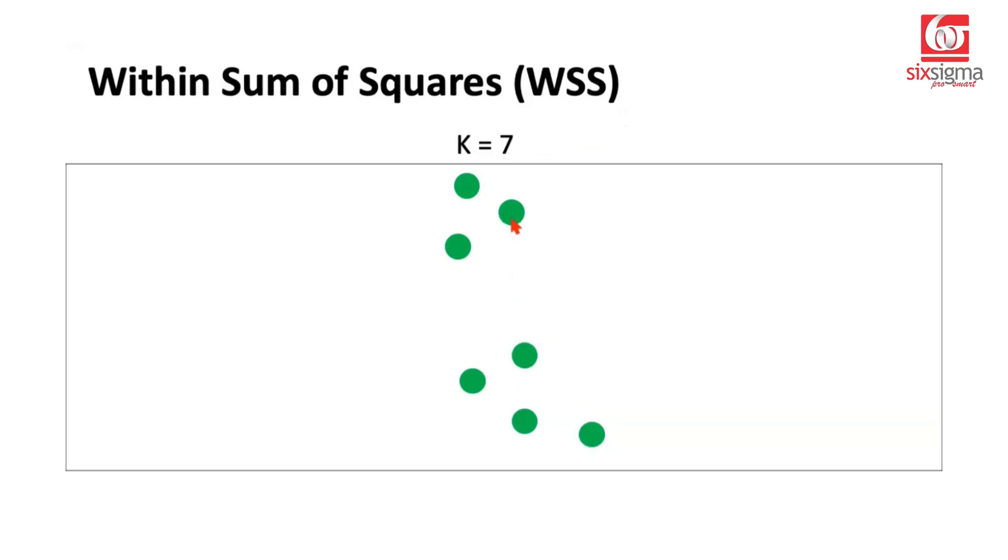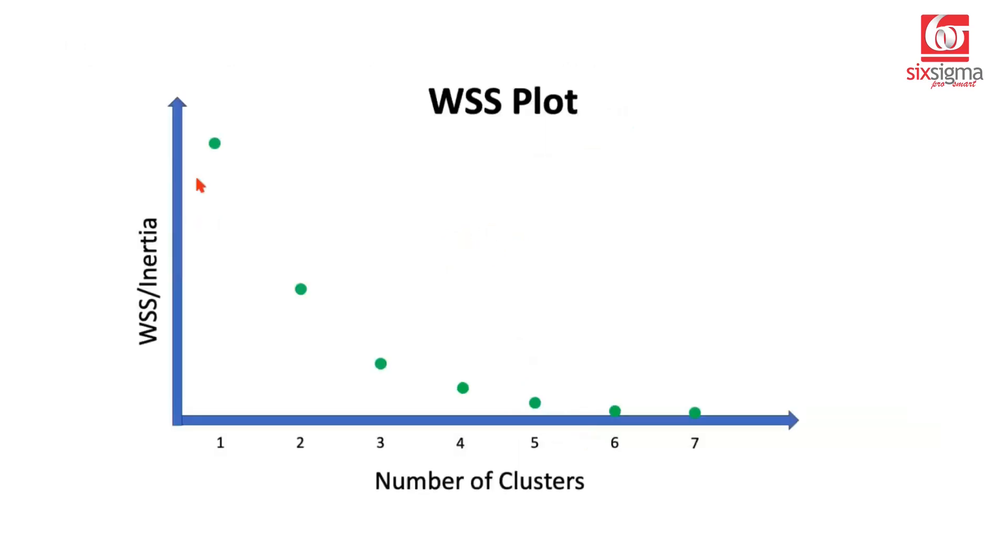Let's see if we start plotting the within sum of squares value for different values of K, what would that look like. Here is a plot called a WSS plot, where on the x-axis we have the number of clusters, and on the y-axis we have the within sum of squares. Another name for within sum of squares is inertia. Initially, the within sum of squares value is much greater. It reduces as we increase the number of clusters. Beyond a point, you will see that the decline is not that steep. It's becoming more and more flat.